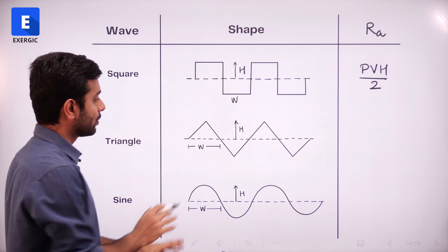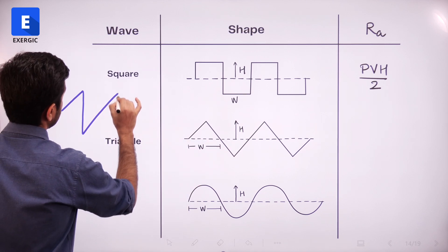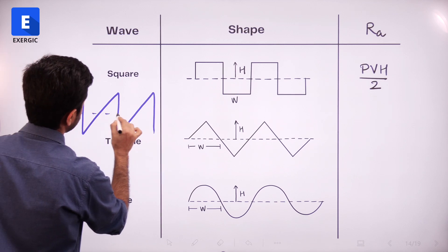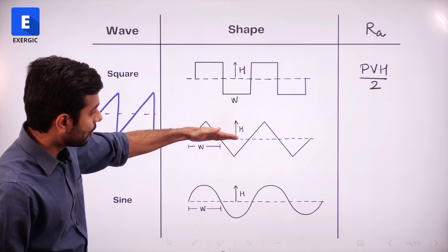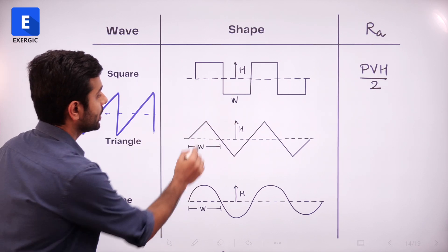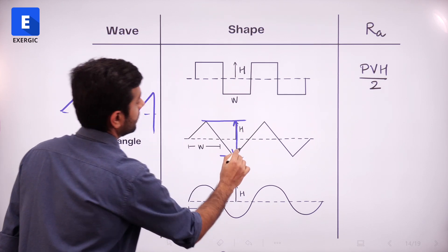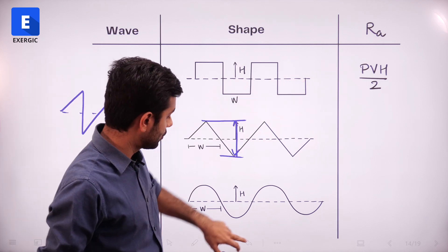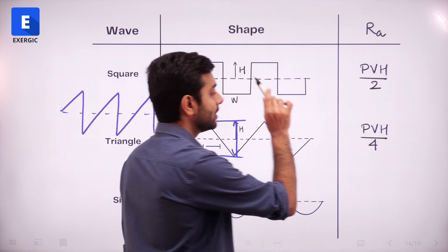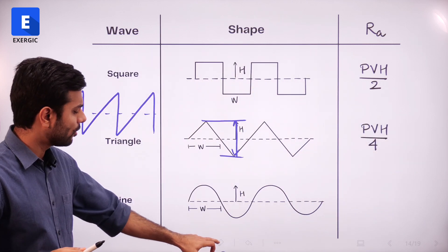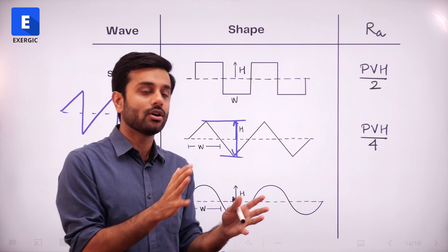For a triangular wave — whether it looks like this or like this — the direct formula is: simply find out the peak-to-valley height. On one side the height is H, so total peak-to-valley height is 2H. For a triangular wave, the RA value is peak-to-valley height divided by 4. I have already done the full derivation and discussion, so I am not repeating it here.